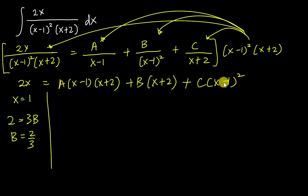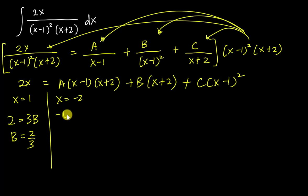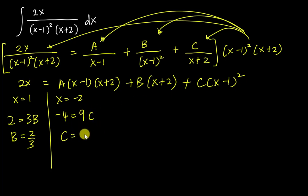Now let x = -2: both the A and B terms become zero. The left side gives 2(-2) = -4. The C term gives C(-2-1)² = C(-3)² = 9C. So -4 = 9C, which means C = -4/9.